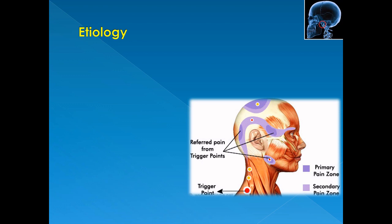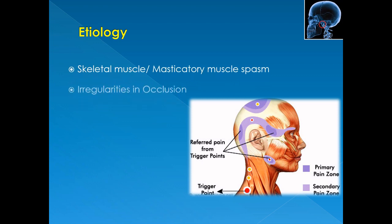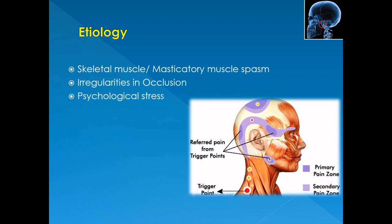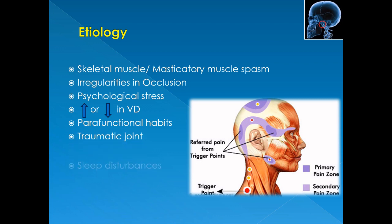The etiology of MPDS is multifactorial. It can be due to skeletal muscle or masticatory muscle spasm, occlusal irregularities, psychological stress, increase or decrease in vertical dimension, parafunctional habits, traumatic joint, and sleep disturbances. All these etiologic factors lead to micro or macro trauma to the musculoskeletal system, leading to muscle spasm. This hypertonicity leads to muscle fatigue and accumulation of metabolic byproducts, resulting in pain and discomfort.